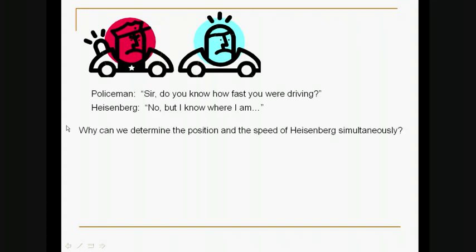Now, if we have Heisenberg's uncertainty principle, how come we can determine the position and the speed of Heisenberg simultaneously? That is, why don't we see in our ordinary lives this uncertainty principle?